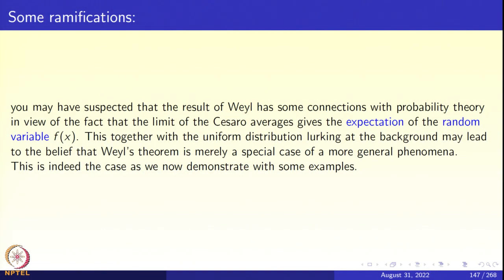You may have suspected that the result of Hermann Weil has some connections with probability theory in view of the fact that the Cesaro sums, the averages that you saw, give the expectation of the random variable f, and this together with the uniform distribution lurking at the background may have led you to believe that Hermann Weil's theorem itself would be a special case of a more general phenomenon.